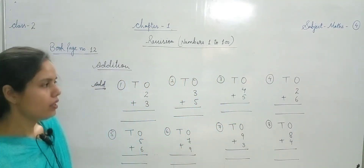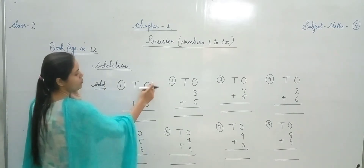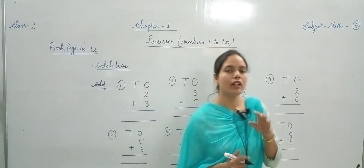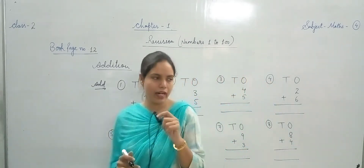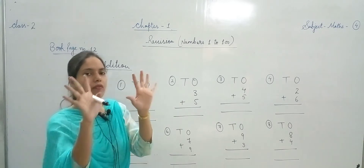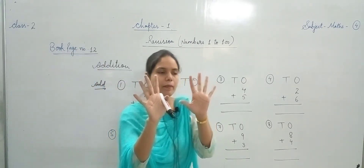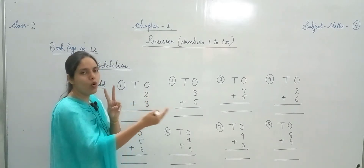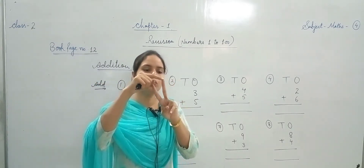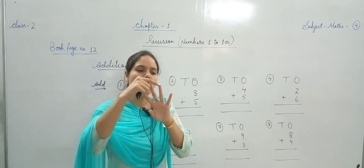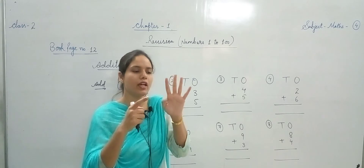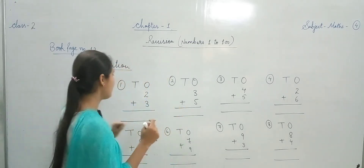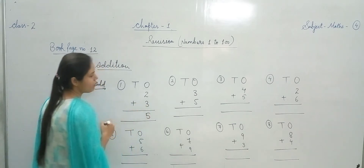Saare questions apne board par note down kiye hain. Now look at the board carefully. Ones वाले column में दो numbers हैं — 2 and 3. Simply lines पर हम addition करना sikh chuke hain, और हमने कैसे सीखा था — fingers की counting करके numbers को add करना। So 2 plus 3 — हमारे पास 10 fingers हैं total। 2 fingers लेनी हैं, और add करनी हैं 3 more। 2 के बाद 1, 2, 3 — यानि total 5 हो गई। Answer है आपका 5।